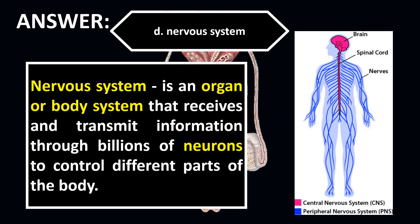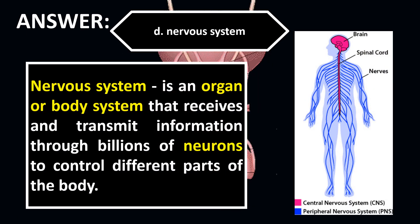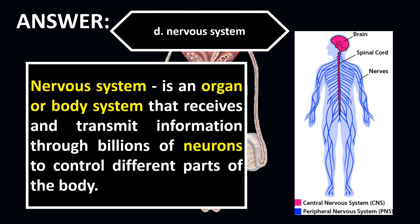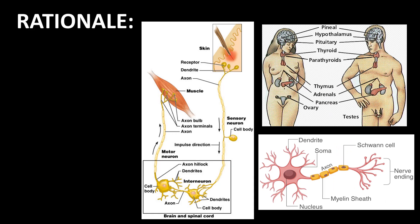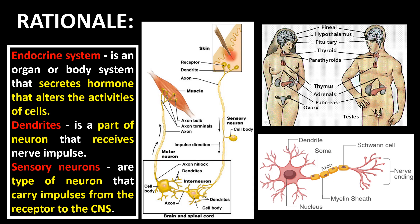The correct answer is letter D, Nervous system. The nervous system is an organ or body system that receives and transmits information through neurons. The endocrine system secretes hormones that alter the activities of cells. Dendrites are the part of a neuron that receives nerve impulses. Sensory neurons are a type of neuron that carry impulses from the receptor to the CNS.